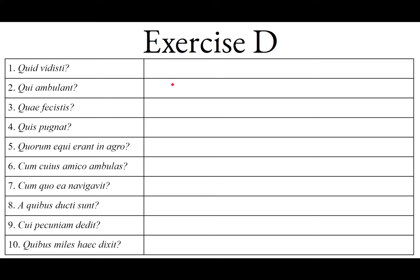Sententia secunda: Qui ambulant. We have an interrogative pronoun here. Qui is nominative plural masculine. Ambulant is third person plural, present tense. So who is doing the walking? Who are walking? We imply these to be plural people. Who are walking?